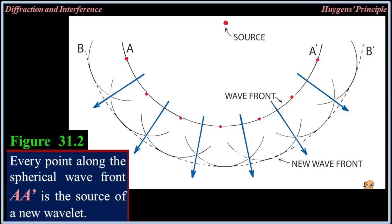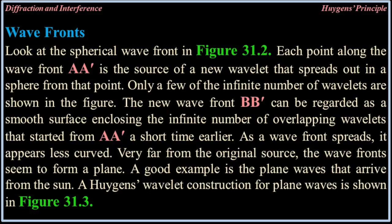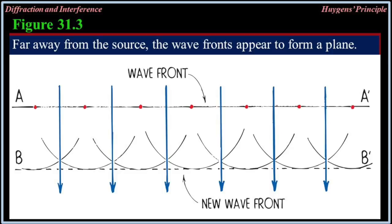Wave fronts. Look at the spherical wave front in figure 31.2. Each point along the wave front, double A prime, is the source of a new wavelet that spreads out in a sphere from that point. The new wave front, double B prime, can be regarded as a smooth surface enclosing the infinite number of overlapping wavelets that started from double A prime a short time earlier. As a wave front spreads, it appears less curved. Very far from the original source, the wave front seems to form a plane — a good example is the plane waves that arrive from the sun. Huygens' wavelet construction for plane waves is shown in figure 31.3.